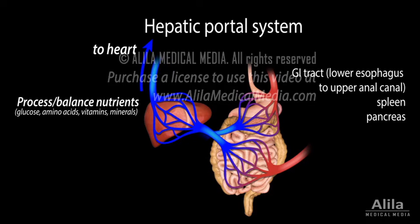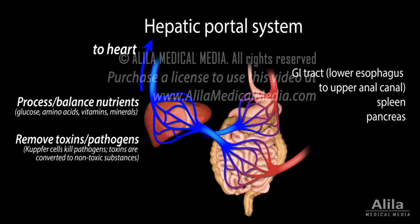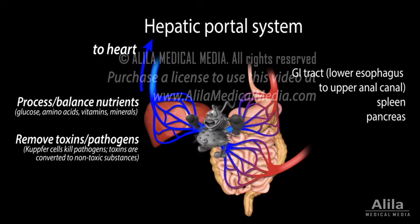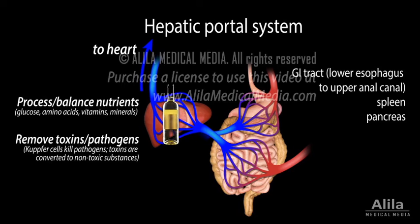This brings us to the second function of the liver as a detoxification organ. The liver screens the blood for potentially toxic substances and pathogens, and removes them before they can reach the rest of the body. It can, for example, remove alcohol and drugs from the blood.